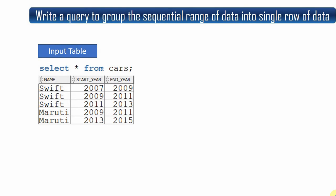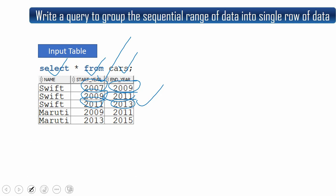So here is a table called 'cars' which contains the name of the car, the start year, and end year. The year may be continuous — for example, it starts at 2007 and ends at 2009. The next row starts at 2009 and ends at 2011, meaning it is actually continuous, so you can say from 2007 to 2011. Similarly it starts at 2011 and ends at 2013, making it a continuous range from 2007 to 2013.